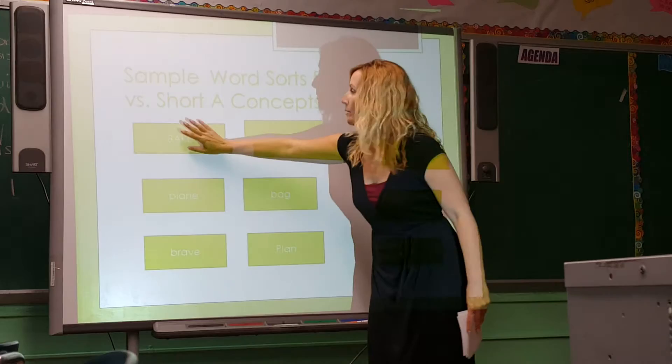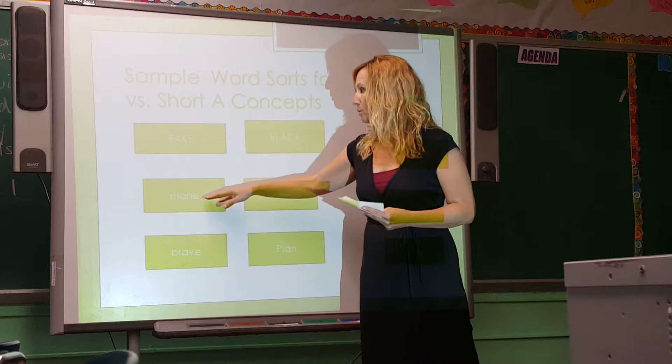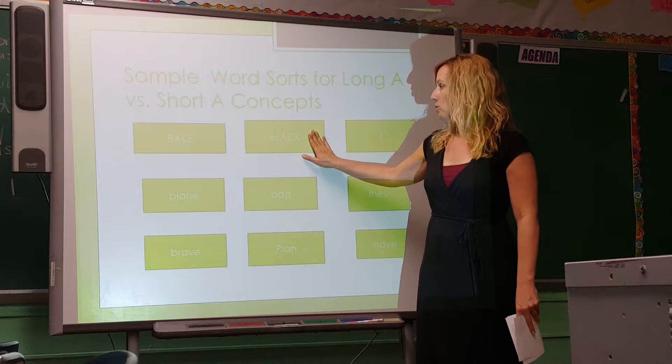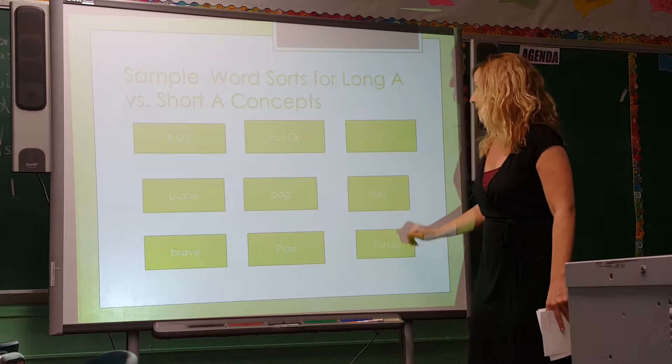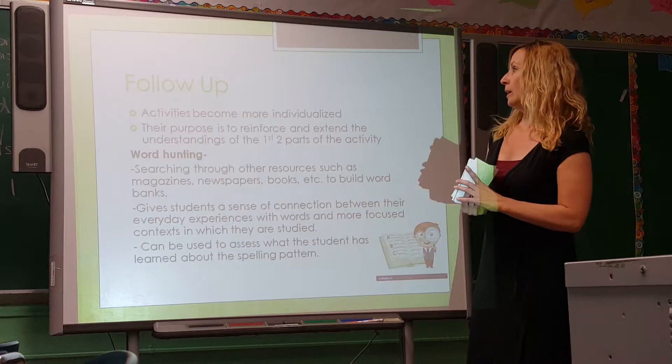Here's an example of a sample word sort using the long A and short A concepts. The keywords are at the top of each column — 'bait' in capital letters and 'black' in capital letters, and then a question mark column. Students find the cards, read the words, and place them under the correct category. 'Plain' and 'brave' have a long A, so they go under the bait column. 'Bag' and 'plan' are short A sounds, so they go under the black column. Students would have to figure out which words — like 'they' and 'have' — belong under the question mark column.